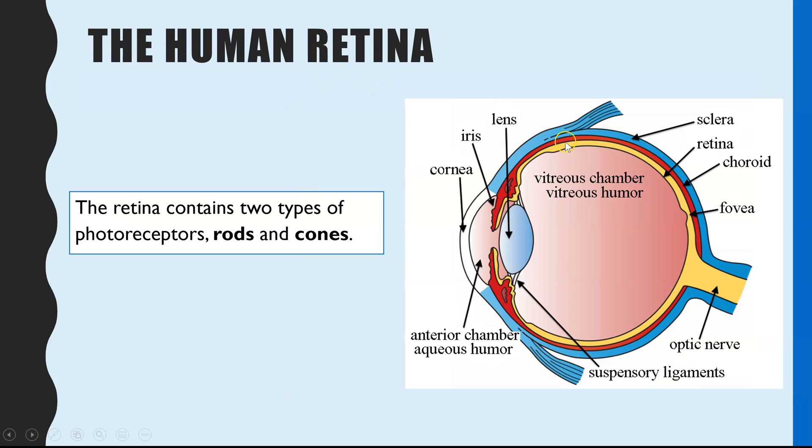So the human retina, this is where we find the rods and cones. And you don't need to know the structure of the eye for A-level biology AQA. You just need to be aware that it's in the retina that you find these photoreceptors. And we're going to come back to the importance of the fovea later on.